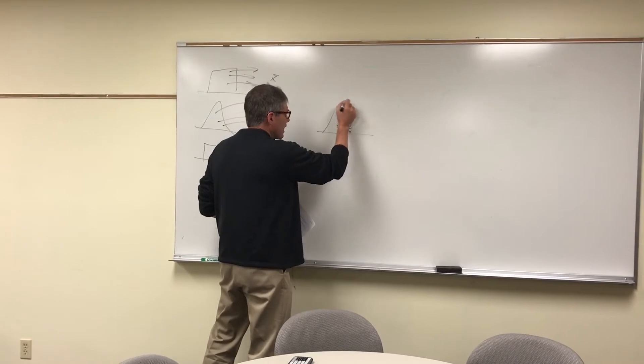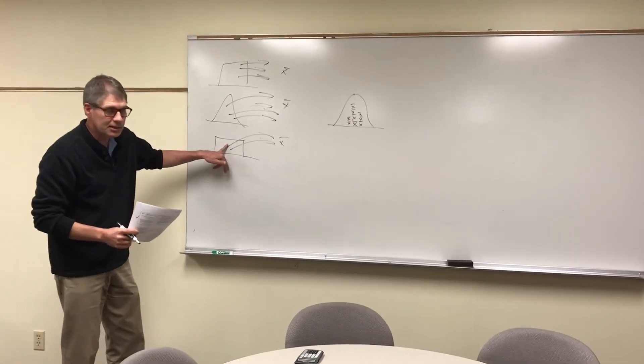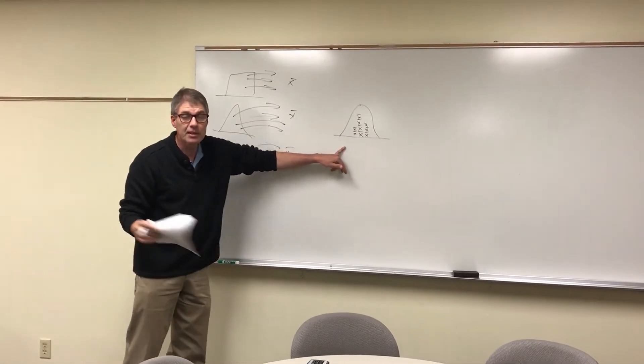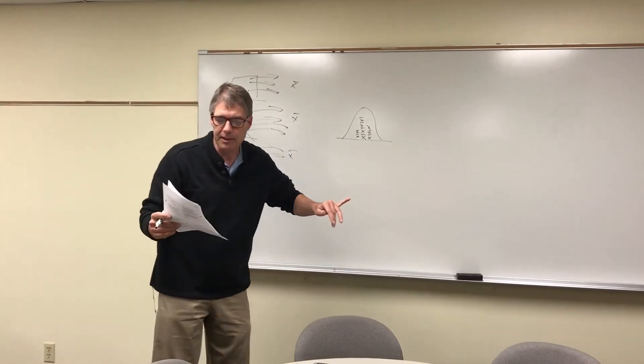What happens, no matter what the shape of the original distribution is, it will end up normal. This is important as we start figuring out probability.